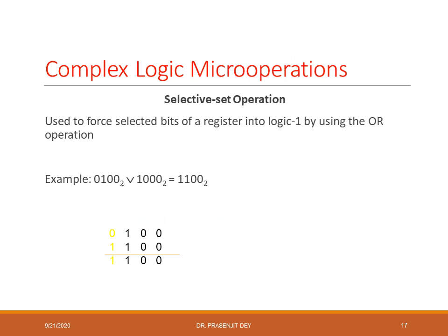Using XOR and OR gates, we can implement complex logical operations like selective set. Selective set forces selected bits of a register to logic 1 using OR operation. For example, if the register value is 0100 and you want to set the most significant bit to 1, you perform an OR operation with 1000, which sets the MSB to 1.